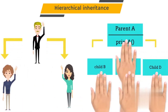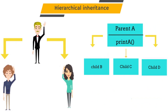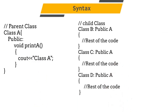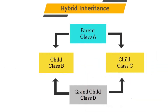The next type is hierarchical inheritance. Here one parent class can have multiple child classes, and every child class can access the properties of the parent class. In the diagram, classes B, C, and D are child classes of class A — all can access the properties of parent class A. You can see the syntax on screen. Next is hybrid inheritance, which is a combination of one or more types of inheritance.